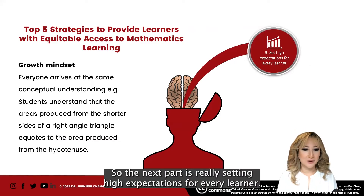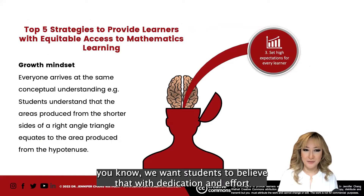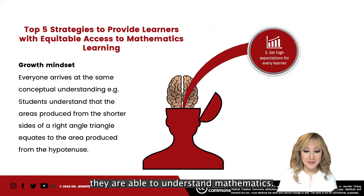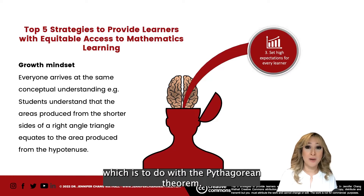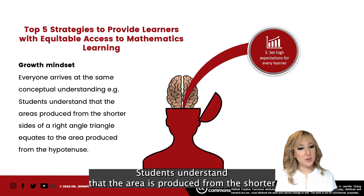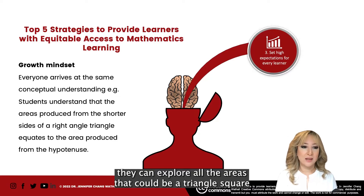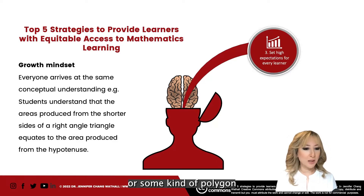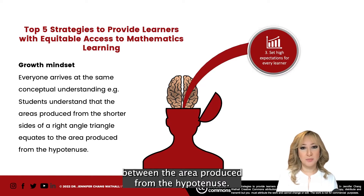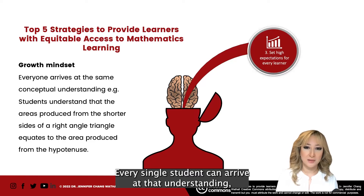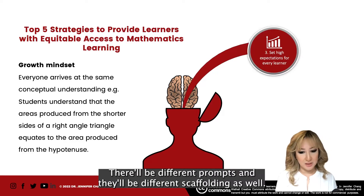The next strategy is setting high expectations for every learner — fostering a growth mindset — because we want students to believe that with dedication and effort they are able to understand mathematics. Everybody can do math, and everyone can arrive at the same conceptual understanding. For example, with the Pythagorean theorem, students understand that the areas produced from the shorter sides of a right-angle triangle equate to the area produced from the hypotenuse. Every student can arrive at that understanding, but perhaps using different calculations, different steps, different prompts, and different scaffolding.